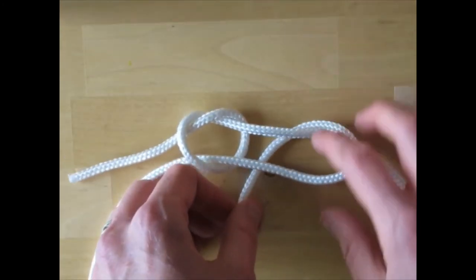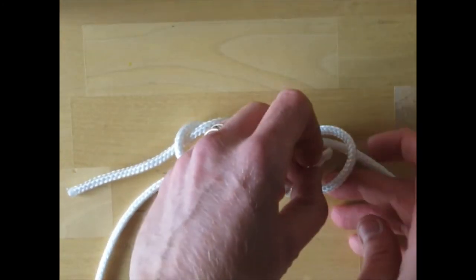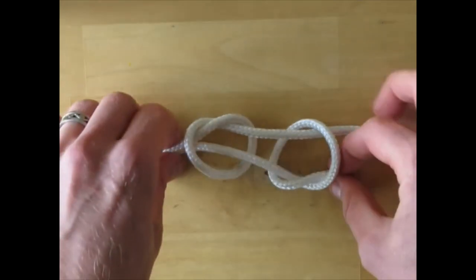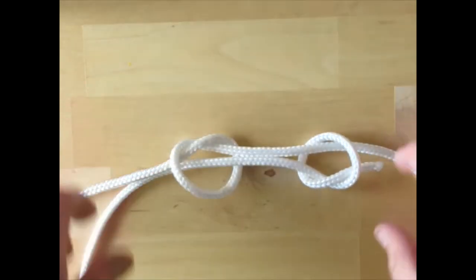Then poke it through the loop as before, this time making sure that the loose end stays on the closer side of the top rope.